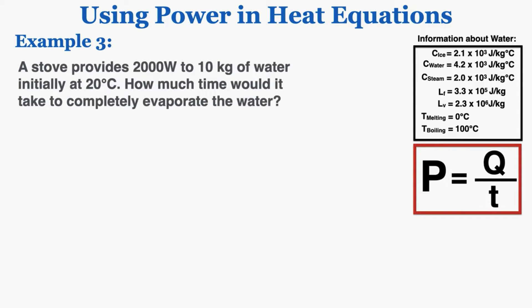In example number three, a stove provides 2,000 watts to 10 kilograms of water initially at 20 degrees Celsius. How much time would it take to completely evaporate the water? The water is changing temperature and then phase, so we need to use Q equals MC delta T and then Q equals ML.